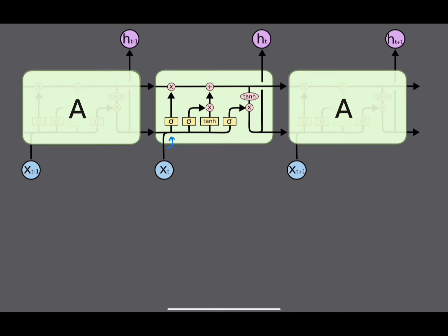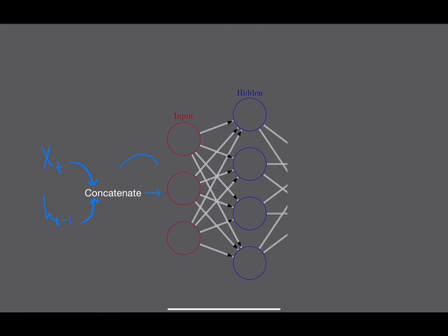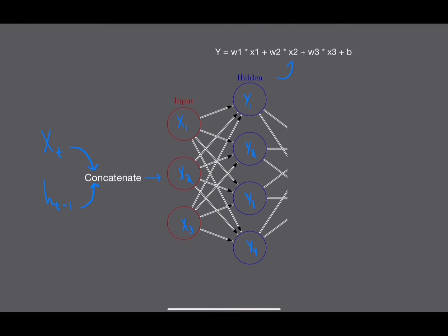The operations inside the LSTM are involved with updating or modifying that cell state. Let's look at the first gate. What's happening is we concatenate xt — the word at our current time step — and ht-1 — the vector from the previous time step. That concatenated vector is passed into a single linear layer. Each node receives the input vector, and in each hidden node, linear regression is applied.